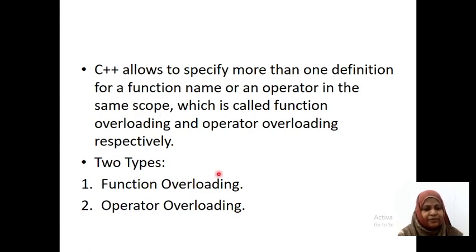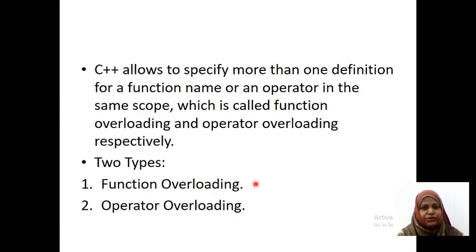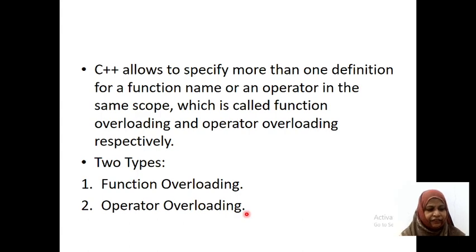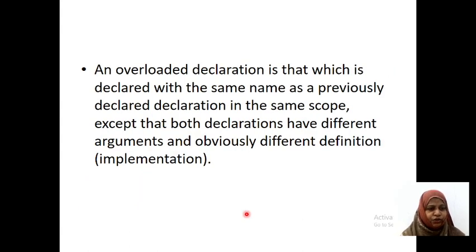C++ supports two types of overloading. The first one is function overloading and the second one is operator overloading. In function overloading, we use the same function name but the definition is different in the same scope. Whereas in operator overloading, we define the operator definition in the same scope. First, we will go for function overloading.